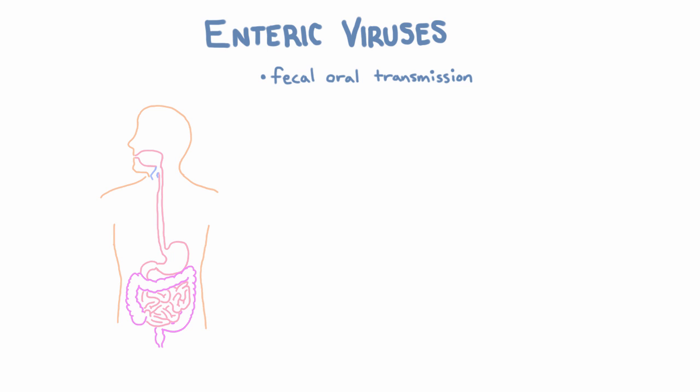Almost all enteric viruses can transmit by the fecal-oral route, and then some can also transmit in other ways. For example, an enteric virus that replicates in the mouth, or one that can also replicate in the respiratory tract in addition to the GI tract, might be able to spread by respiratory droplets.